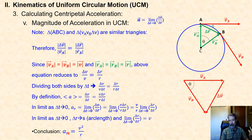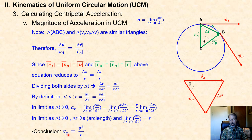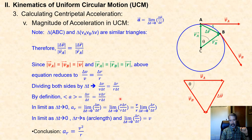We symbolize centripetal acceleration as A sub R — R for radial — because it is directed radially inwards. Some texts use A sub C for centripetal; either convention works. The magnitude is V squared over R.